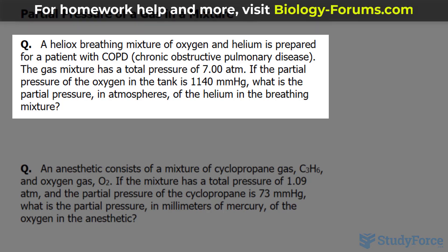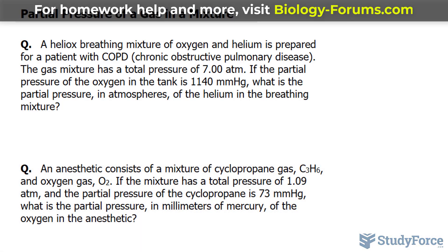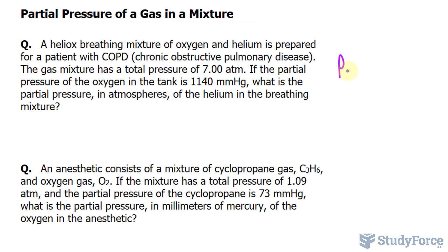The gas mixture has a total pressure of 7.00 atmospheres — let's write that down. The total pressure is 7.00 atmospheres. If the partial pressure of the oxygen in the tank is 1,140 millimeters of mercury, what is the partial pressure in atmospheres of the helium in the breathing mixture?